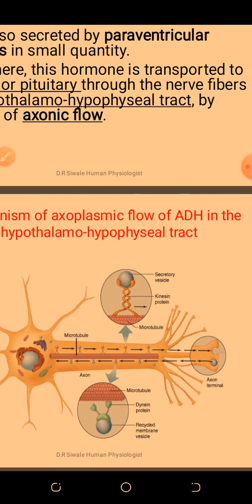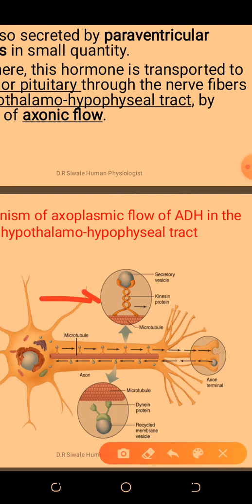This is axoplasmic flow. Kinesin moves faster compared to dynein — about 400 millimeters per day in some literature. This direction towards the terminal is called the anterograde direction, while the reverse is called the retrograde direction. Apart from ADH and oxytocin, other substances transported in the anterograde direction include viruses and recycled synaptic vesicles, which are transported by dynein.